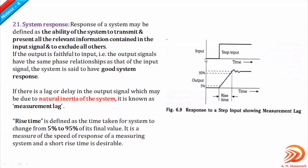Whenever an input signal is supplied to a measurement system and there is a change in the input signal, that change may not be immediately responded to as an output. For example, if there is a step increase in the input, the output won't generate immediately — it requires a certain amount of time to respond. This can be considered as a lag or delay in the output signal, which is called measurement lag.